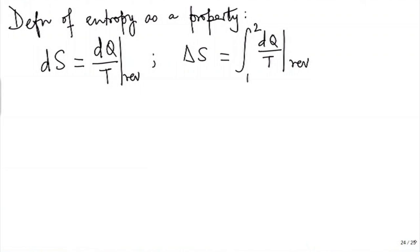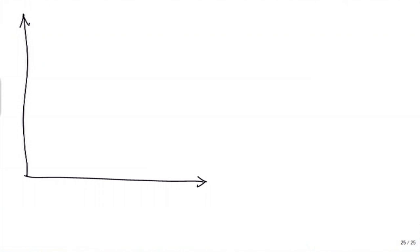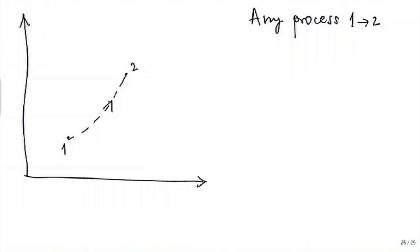Now what we do is we consider any process — let us say a process 1 to 2. I will just show it by a dotted line. It could be quasi-static, it could be non-quasi-static, it could be reversible, it could be irreversible. Use your favourite coordinates — x1, y1 if you feel like.